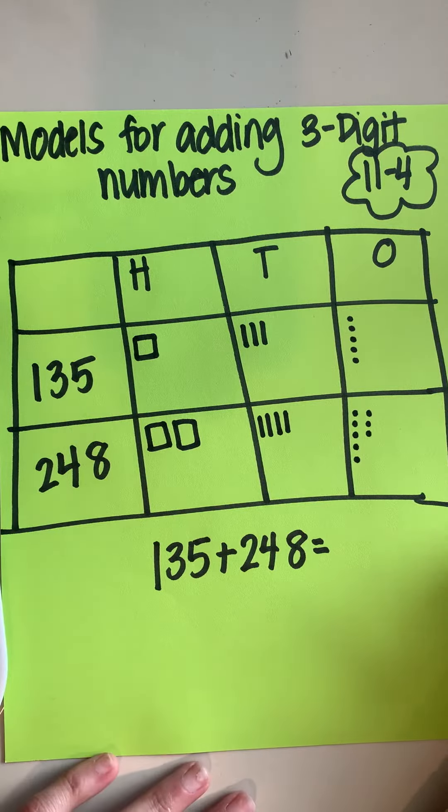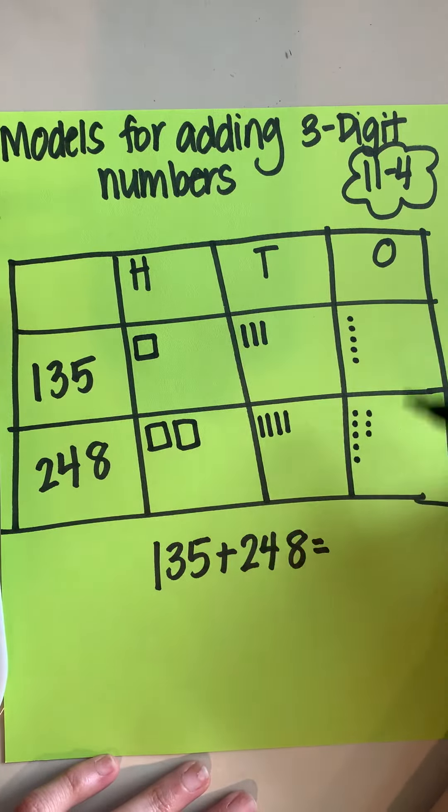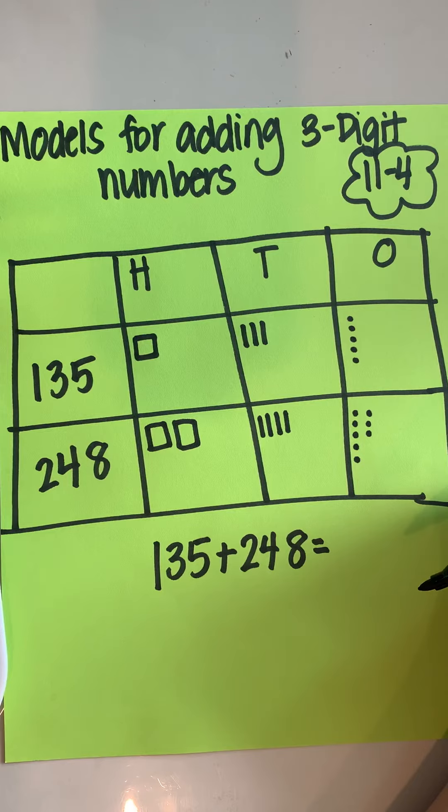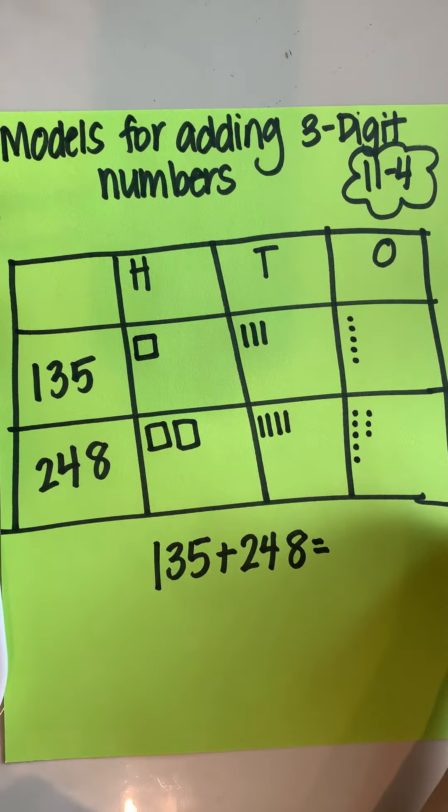All right, just like when we're adding, we're going to start with the ones first. So I have eight ones down here plus five. I know that eight plus five is going to get me 13. So I basically need to make a 10 and scoot it over.